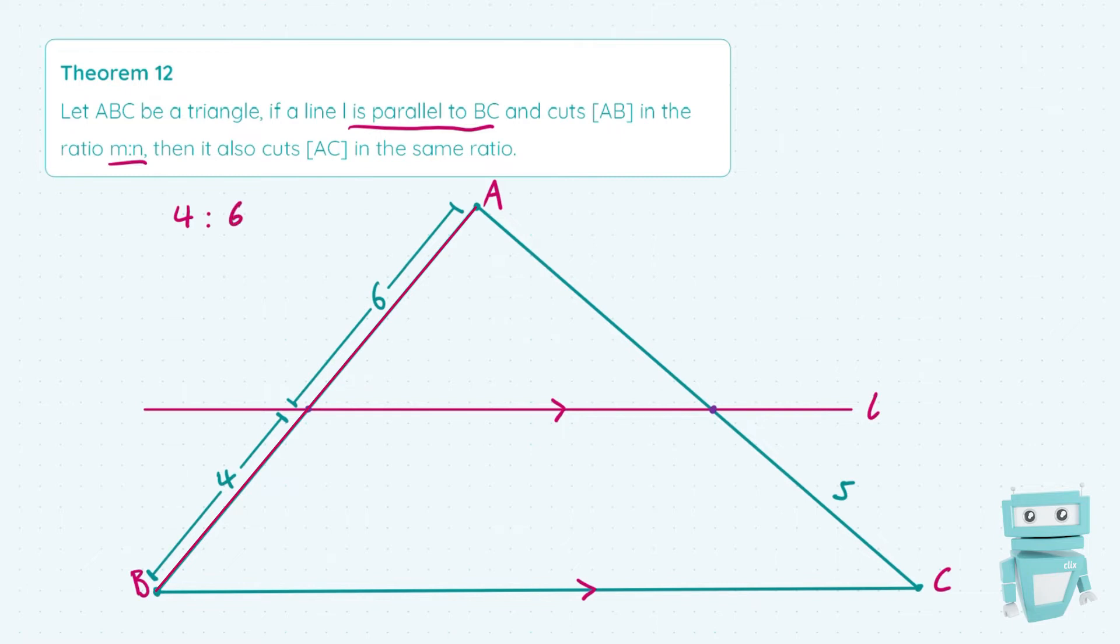But we always want to represent ratios with 1 on the left-hand side, that's just convention. So we're going to divide both sides of this ratio by 4, which is entirely possible and allowed because a ratio is just a relationship between two numbers. We're going to divide across here by 4 and we're left with the ratio 1 is to 1.5.